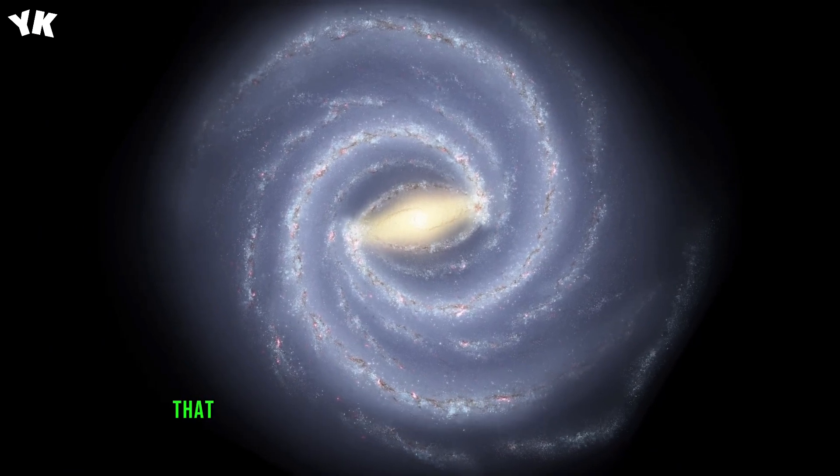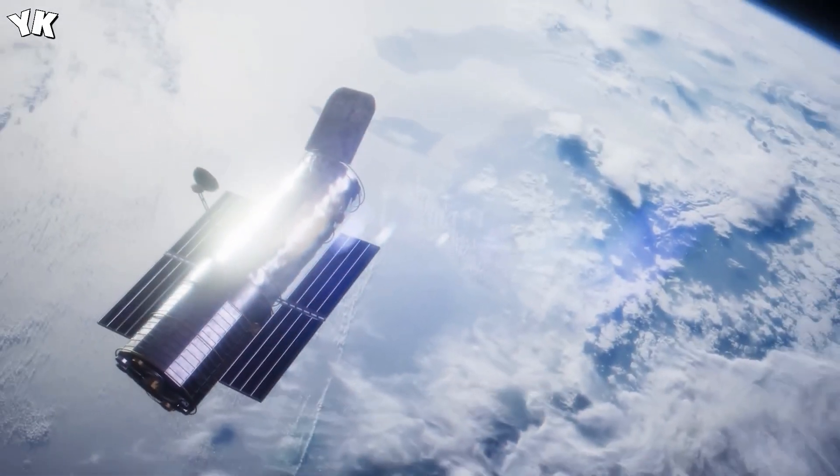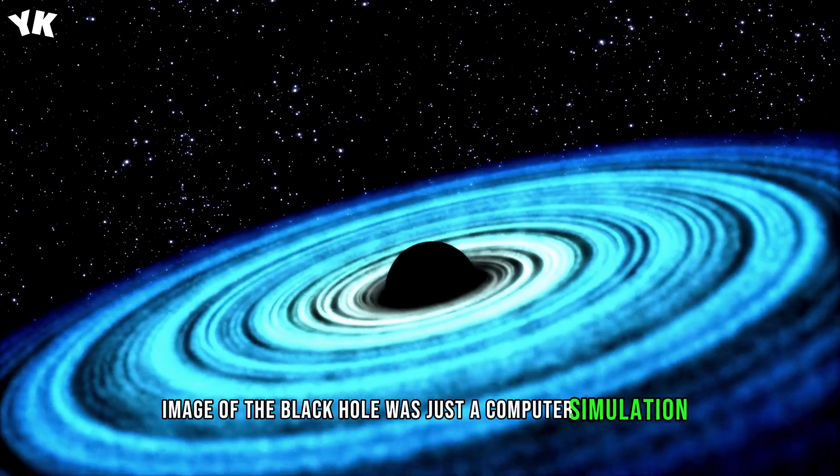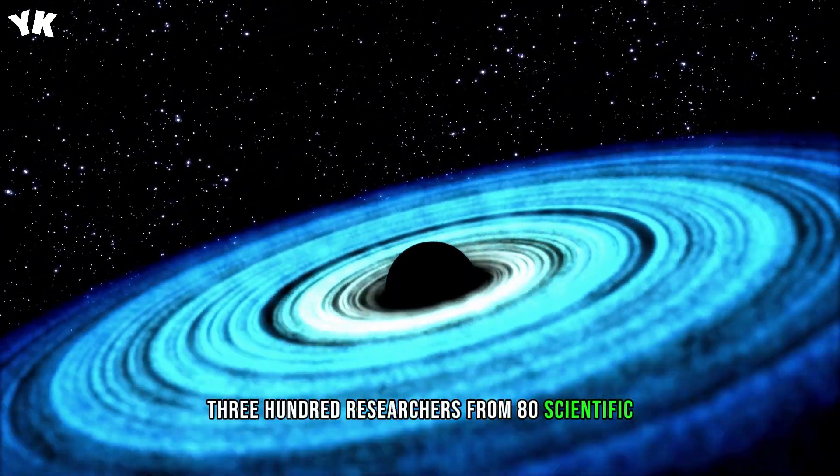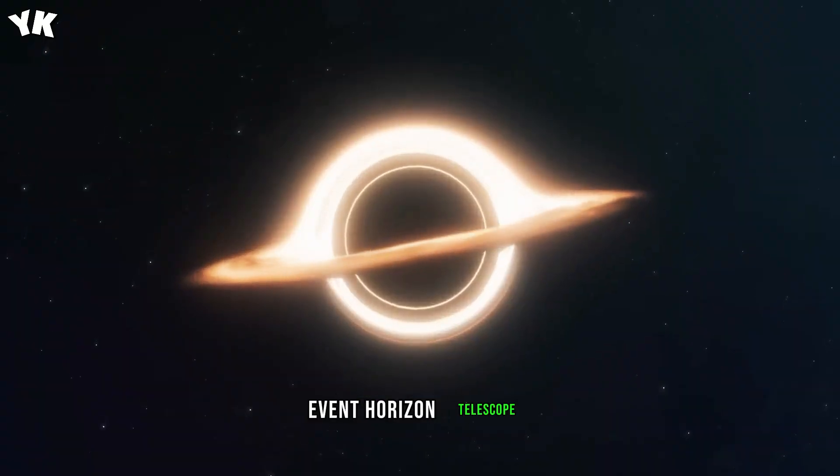Observations also showed that stars are attracted to the center of the galaxy by an incredibly massive object. However, any image of the black hole was just a computer simulation. To get a real image of it, 300 researchers from 80 scientific institutions around the world created a powerful Event Horizon Telescope.